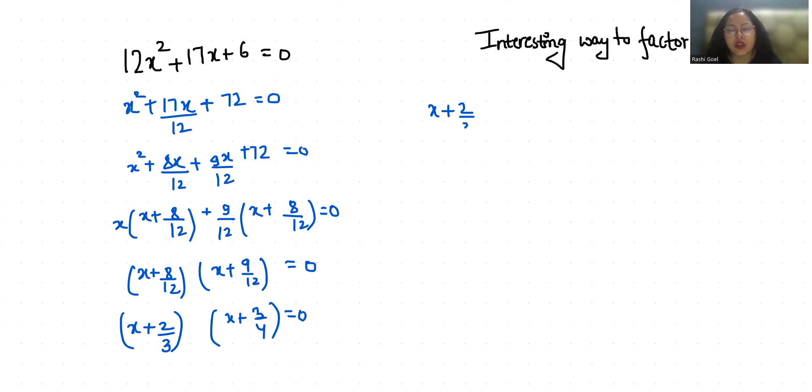zero, so the value of x is minus 2 by 3. Second, x plus 3 by 4 equals zero, so x equals minus 3 by 4. I hope you liked the way I solved it.